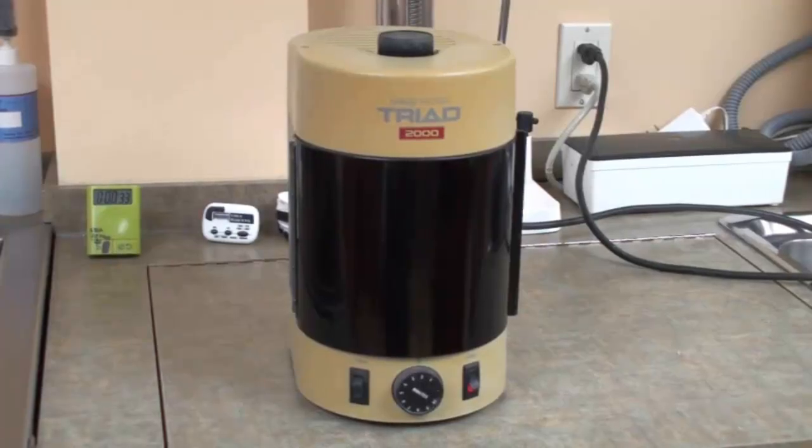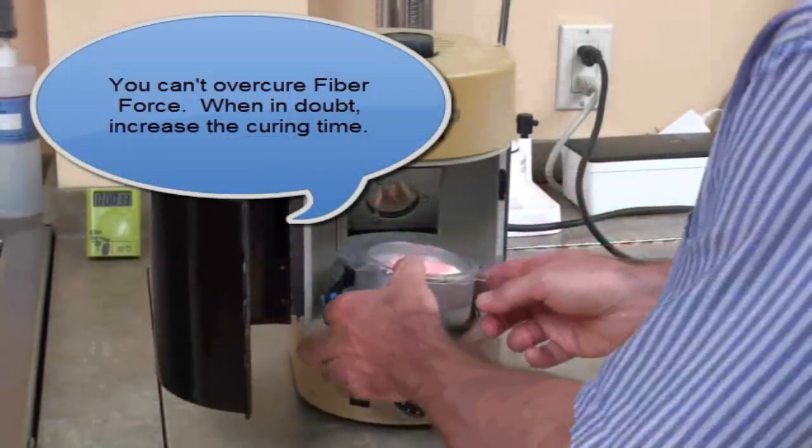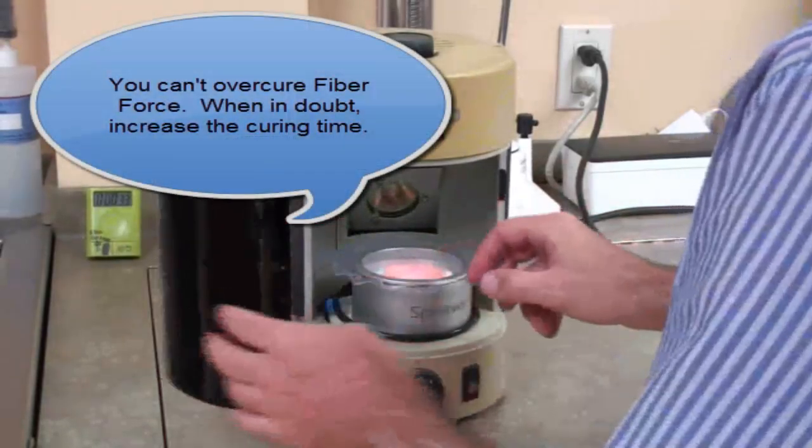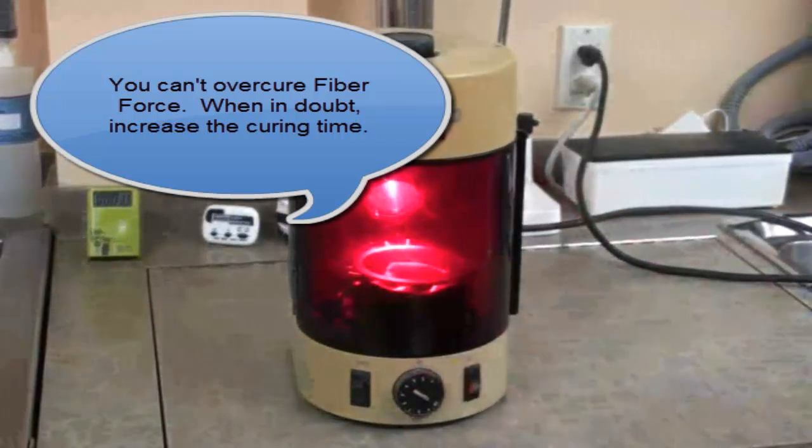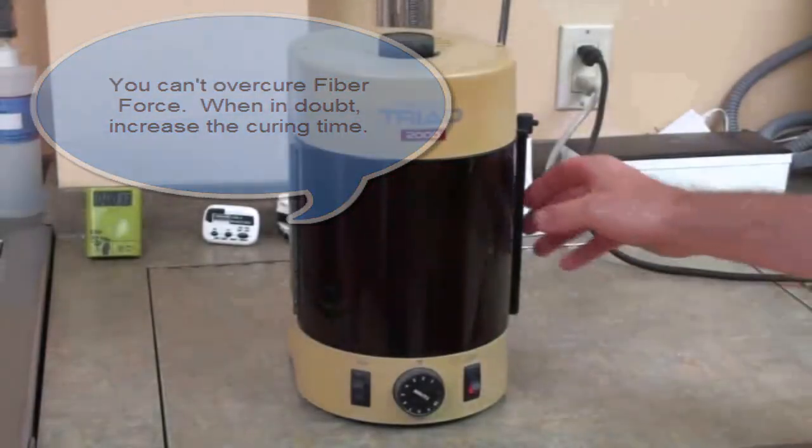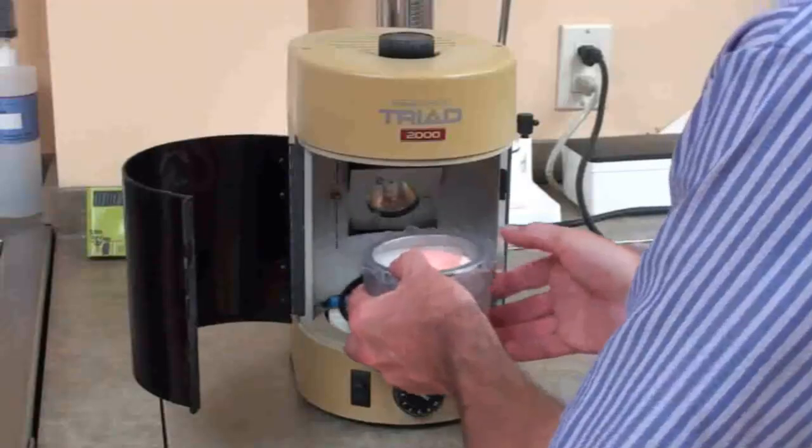The splint vac unit is then placed inside a light curing unit, such as a triad, to polymerize the mesh framework. As long as the splint vac fits inside, any light curing unit will work. The stronger the unit, the less curing time is required. Once the appropriate time has passed, the splint vac is removed.